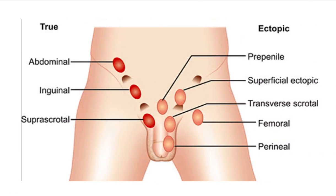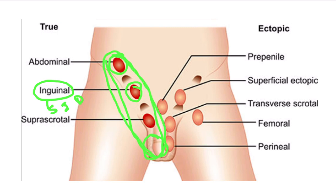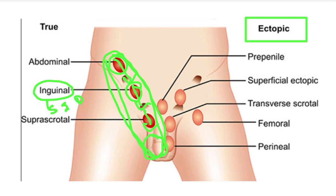The normal pathway consists of five locations: abdomen, deep inguinal ring, inguinal canal, superficial inguinal ring, and scrotum. When the testis is arrested at any of these, it is the undescended testis. When the testis is found outside this pathway, it is the ectopic testis. Ectopic locations include: pre-penile (base of penis), superficial inguinal area, transverse scrotal, femoral, and perineal.